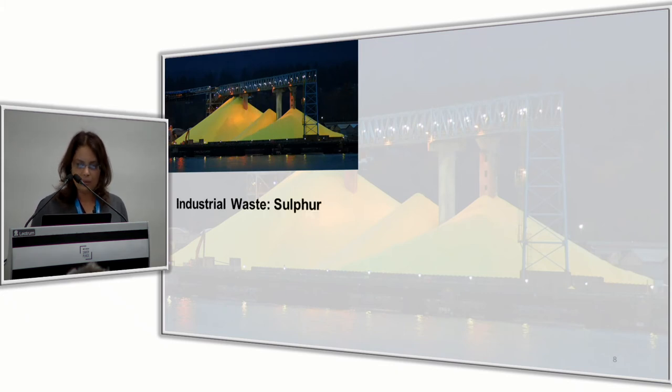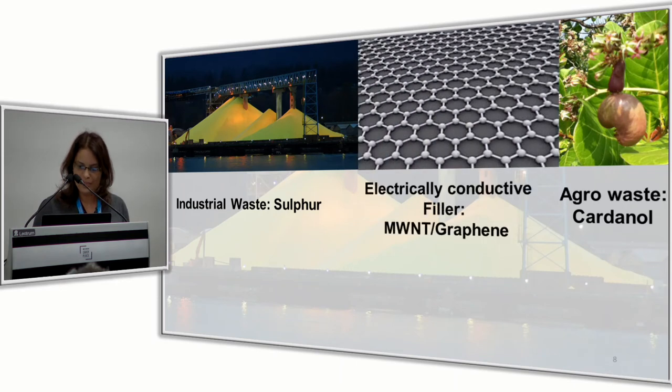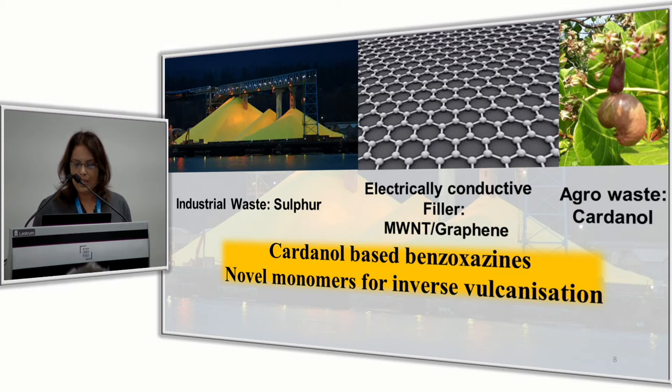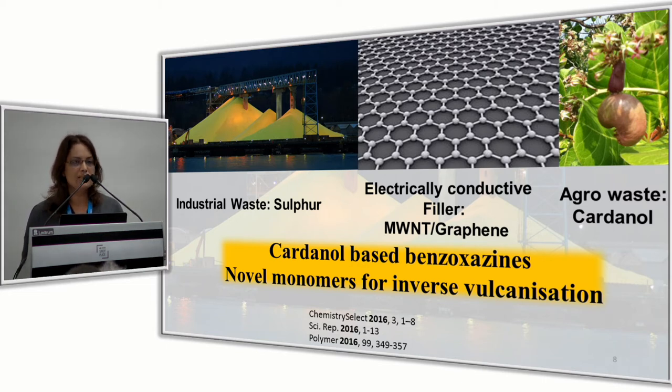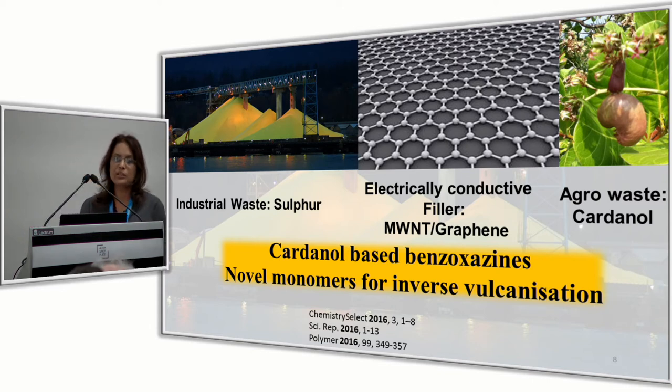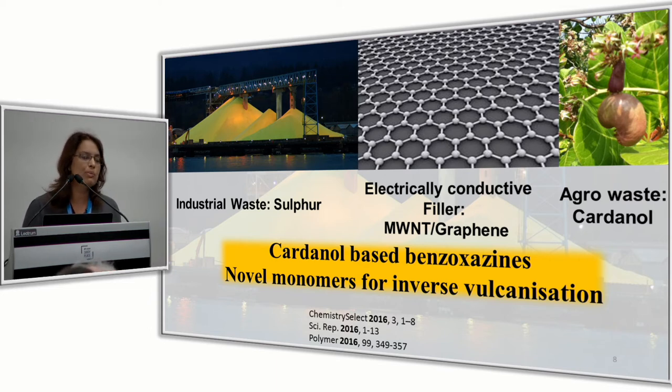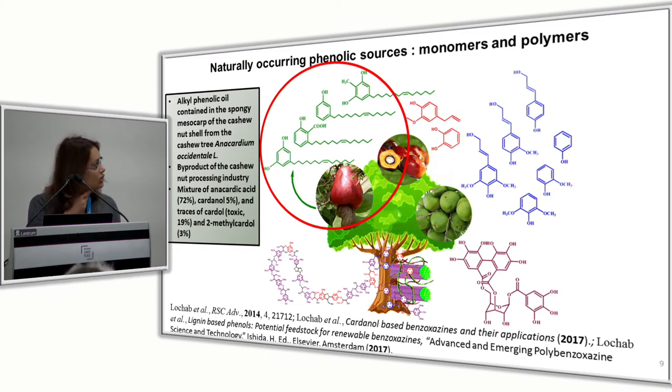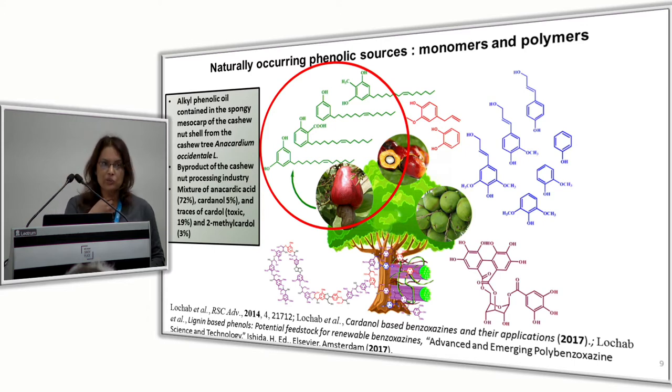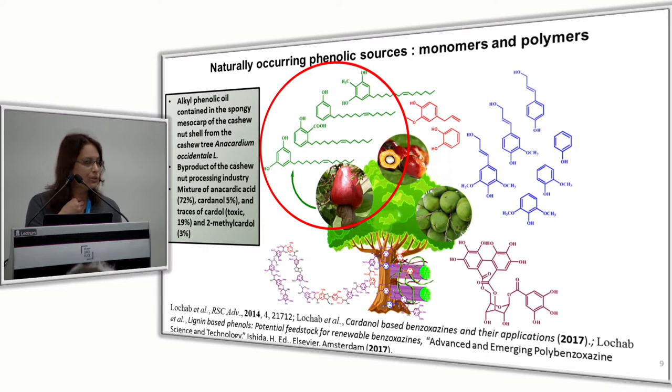I started looking at what is available in India. India is rich in lots of agro waste known as cardanol, a phenolic liquid. Industrial waste is sulfur. Can we combine these two things together with some sort of electrically conductive filler? Because the polymer is non-conducting and sulfur is non-conducting. This will mediate the utilization of cardanol-based benzoxazines using the inverse vulcanization route, which is coined by Pyun et al recently.